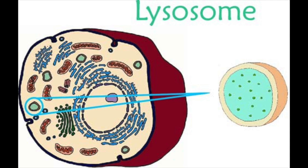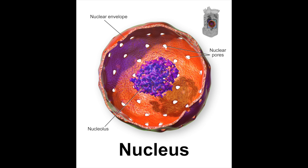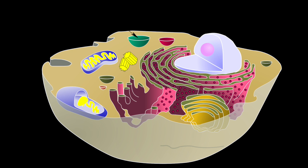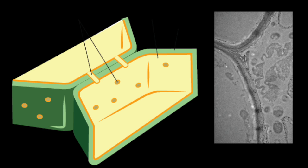We also have the lysosomes, the ribosomes, the nucleus, the vacuoles, and the cytoskeleton. And now onto the cell wall and the cell membrane.